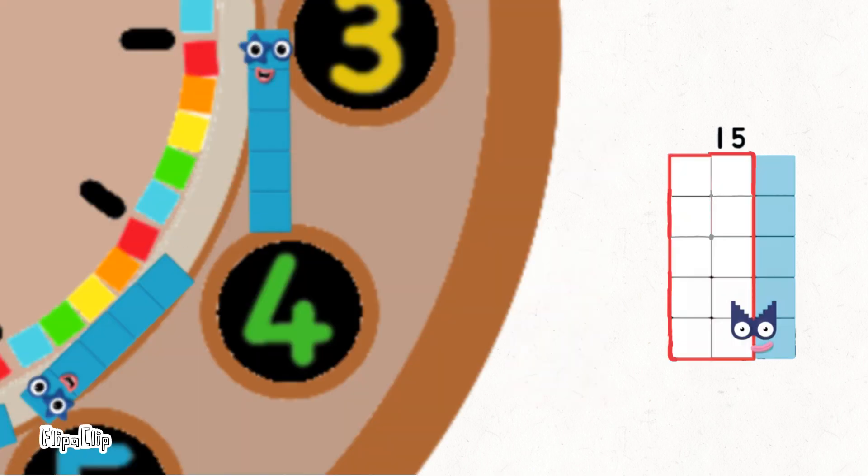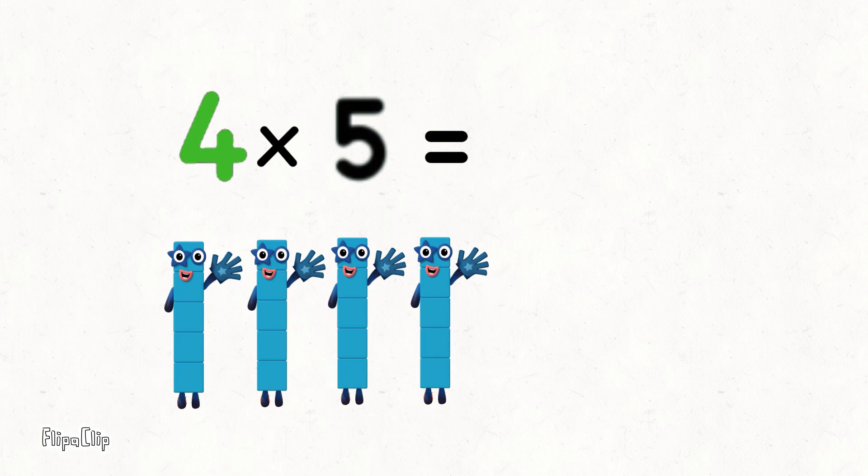The secret is counting in fives, that's the key. Four lots of five are twenty.